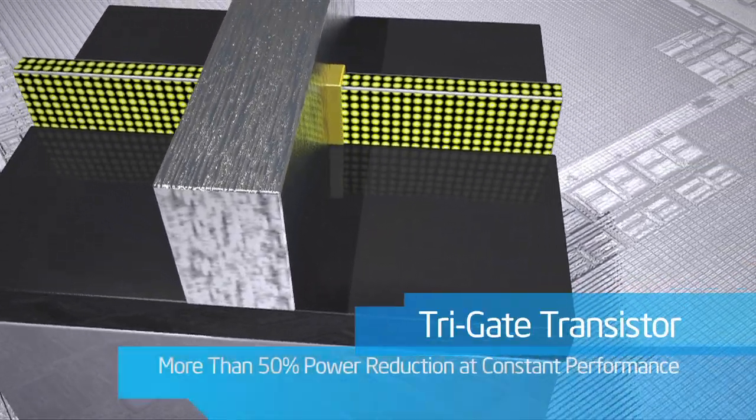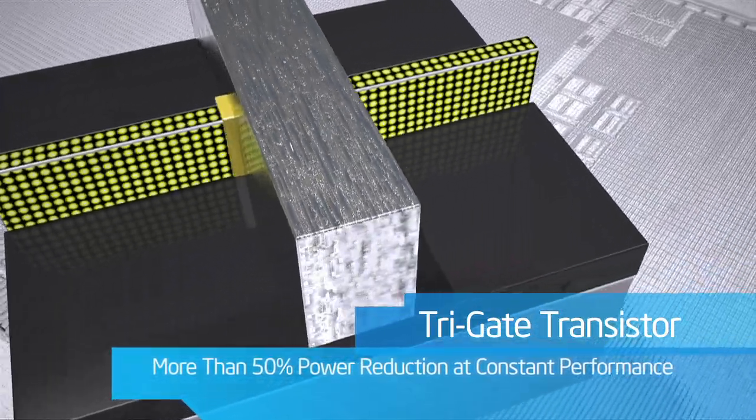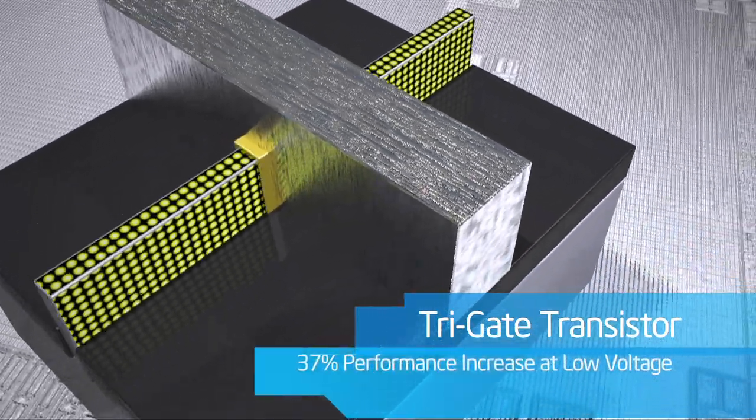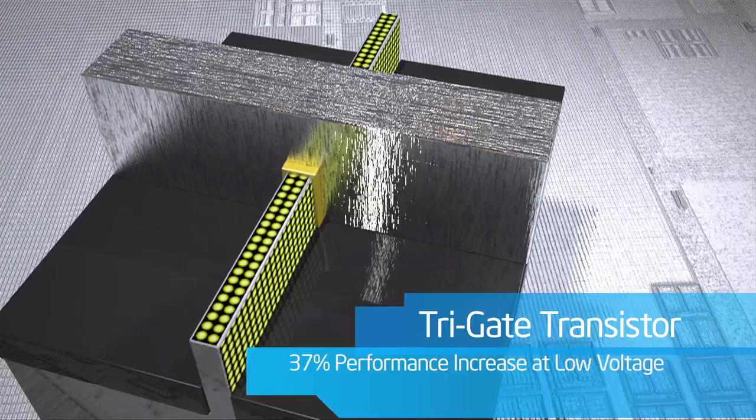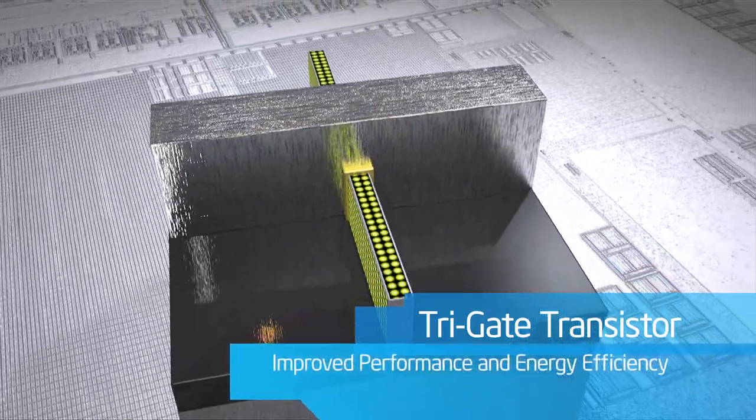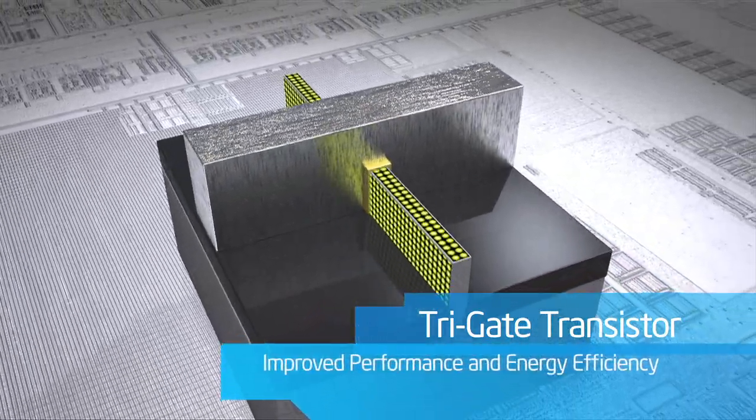We call this a tri-gate transistor, and its real advantage over planar is the ability to operate at lower voltage with lower leakage, providing an unprecedented combination of improved performance and energy efficiency. This breakthrough invention allows Intel to create transistors that are smaller, faster,